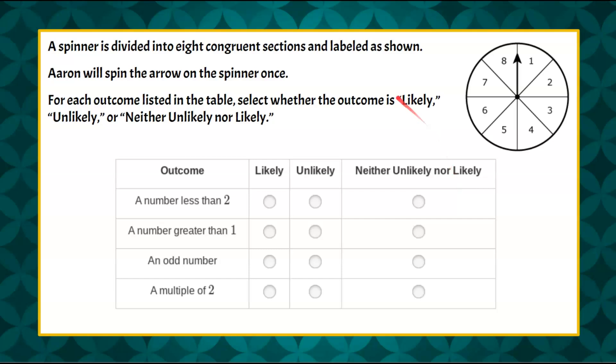Welcome back! So again, we have a spinner with a spin, and we're going to spin the arrow on the spinner one time. And then we're going to determine if it's a likely outcome, unlikely, or neither unlikely nor likely.